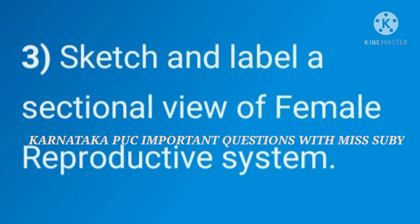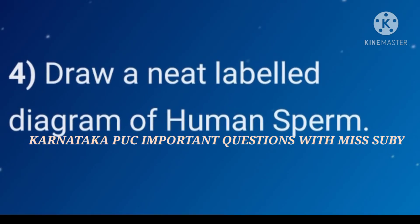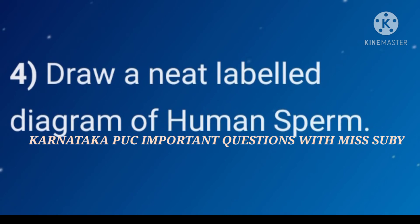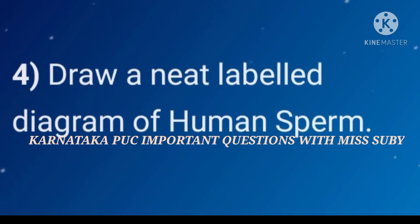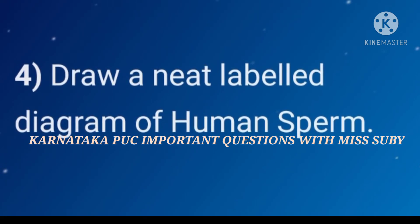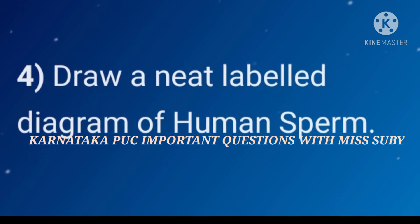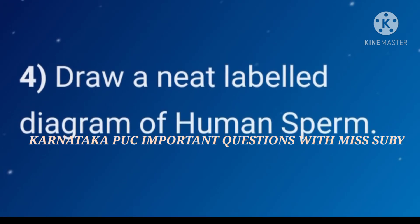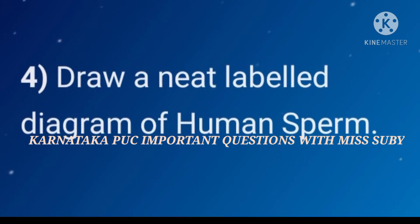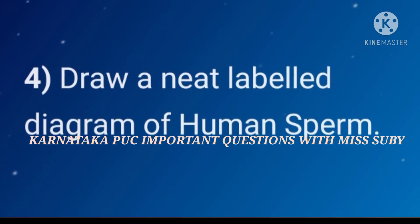The fourth important question is: draw a neat labelled diagram of a human sperm. This also carries five marks, and here you have to label at least five to six parts.